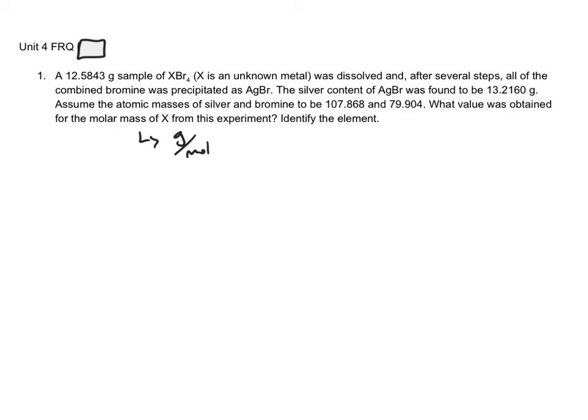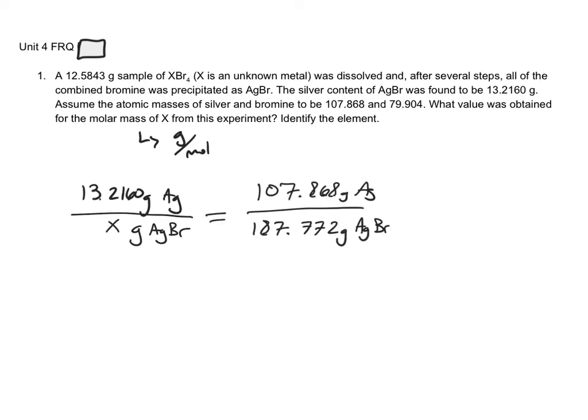So the beginning of this problem is going to focus around the Br content in AgBr. So we found that there's 13.2160 grams of silver in the AgBr. But we don't know how much total AgBr there was produced. Now if I'm thinking correctly mathematically, if you compare the mass of Ag divided by the total mass of the AgBr, you can also set that equal to the ratio of the molar mass of Ag over the molar mass of AgBr. Because these two numbers are proportional.